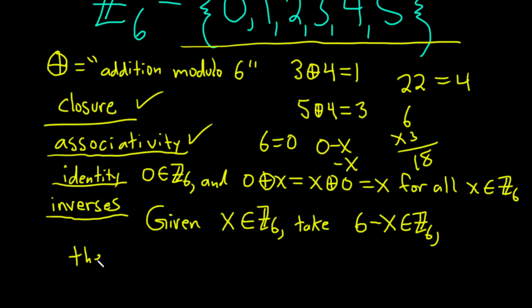Then if we have x plus 6 minus x, circle plus, this is basically going to give us 6. And this is going to be equal to 0, right? So that's the identity element. And so all is good.